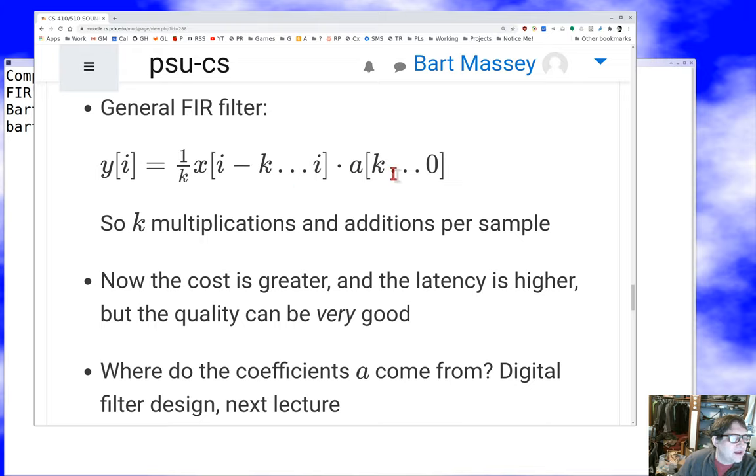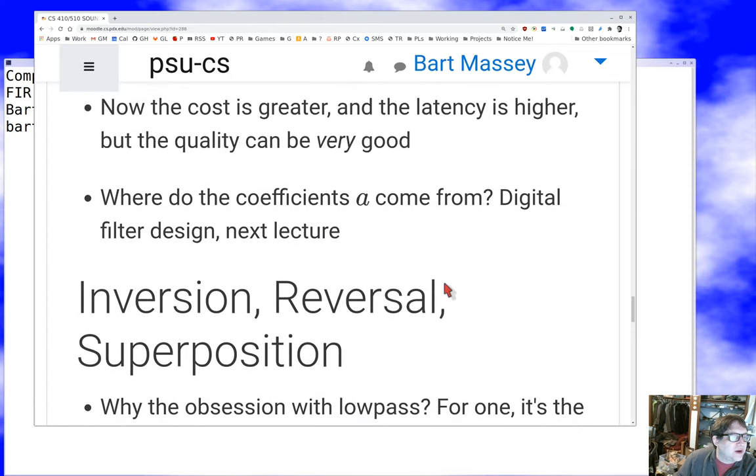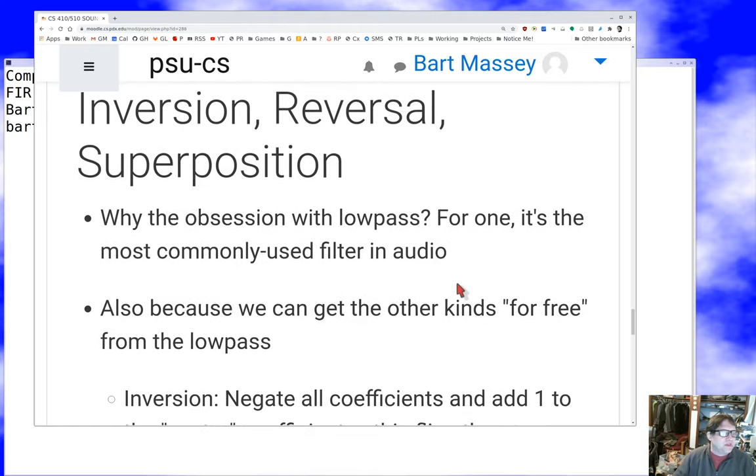This general convolution is going to take K multiplications to compute the individual terms and then K minus one additions to get the thing out. The quality per unit cost is not spectacular, but you can do a lot of multiplications and additions fast on a modern computer. Next lecture we'll talk about what coefficients should I use.